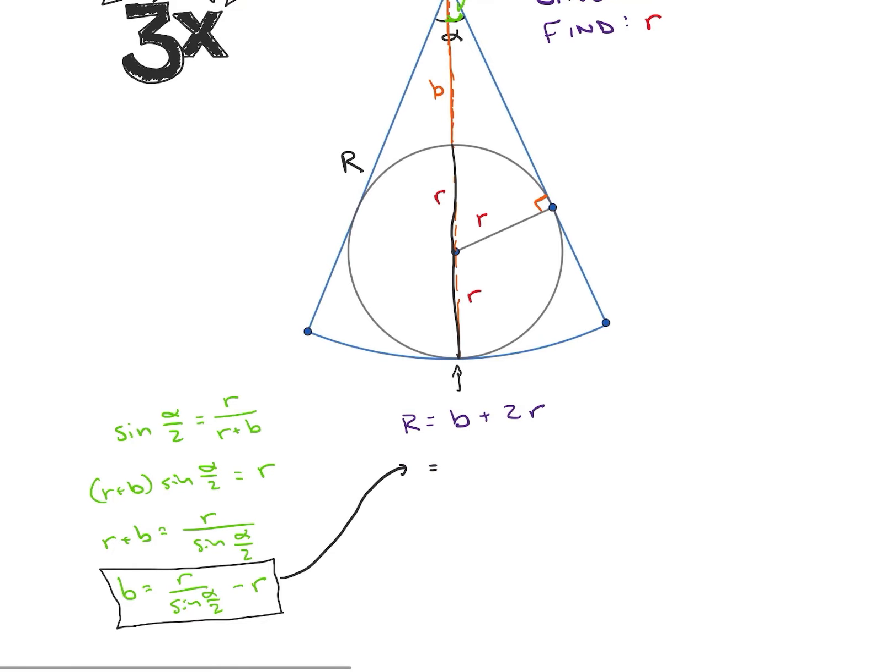We're going to end up getting this is equal to r over sine of alpha over 2 minus r plus 2r. Okay. So we notice that we have minus r and plus 2r so that's just going to become r. So let's rewrite this.